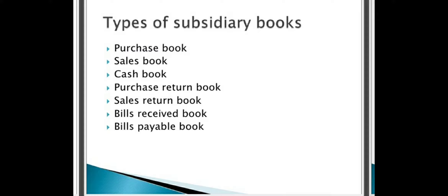Coming to the types of subsidiary books — there are many types, but the popular ones we are going to discuss now. The first one is purchase book, second is sales book, third is cash book, fourth is purchase return book, fifth is sales return book, sixth is bills receivable book, and bills payable book. These are the main and popular types of subsidiary books.